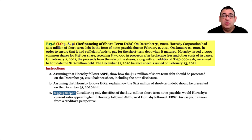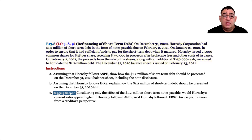Then on February 21, the proceeds from the sale of the shares, along with an additional $250,000 in cash, were used to liquidate the $1.2 million in debt. The December 31, 2020 balance sheet is issued on February 23, 2021. Our two requirements for this problem are to show how the $1.2 million in short-term debt would be presented under both ASPE and IFRS on the balance sheet or statement of financial position.